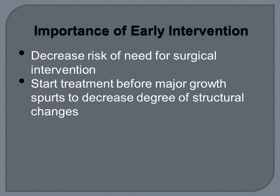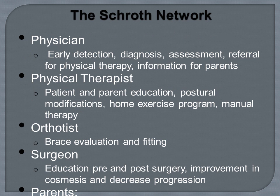Early intervention is important — it will decrease the risk of surgical intervention. If treatment can be started before a major growth spurt, we can also work on decreasing the degree of structural changes that will occur as a result of scoliotic progression. A supportive network is very important for patients with scoliosis and includes a physician, physical therapist, orthotist, and potentially a surgeon. Good communication between all of these individuals will help provide the patient with better outcomes.